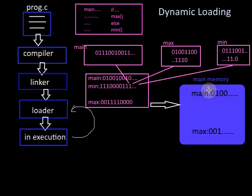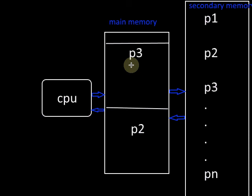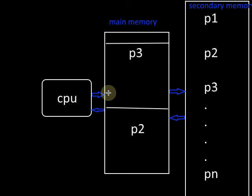So how can we use dynamic loading to increase the degree of multiprogramming? For each process, even though the program consists of a large piece of code, only a part of it is mostly executed. By using dynamic loading, for each process we first load only the main routine into main memory, and then a routine is loaded only if it is called and executed. Therefore each process requires only less memory space within main memory, and hence we are able to load more processes into main memory, thereby increasing the degree of multiprogramming and CPU utilization.